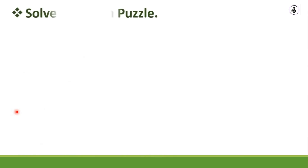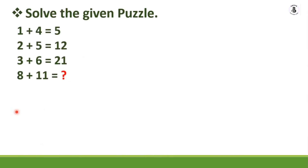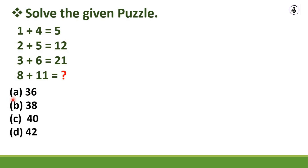Now the next problem. Solve the given puzzle: 1 + 4 = 5, 2 + 5 = 12, 3 + 6 = 21, and 8 + 11 = ? The options are: A) 36, B) 38, C) 40, D) 42. I'll give 10 seconds to solve this.